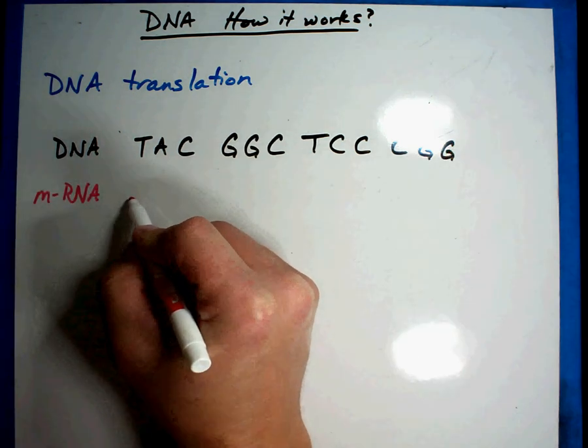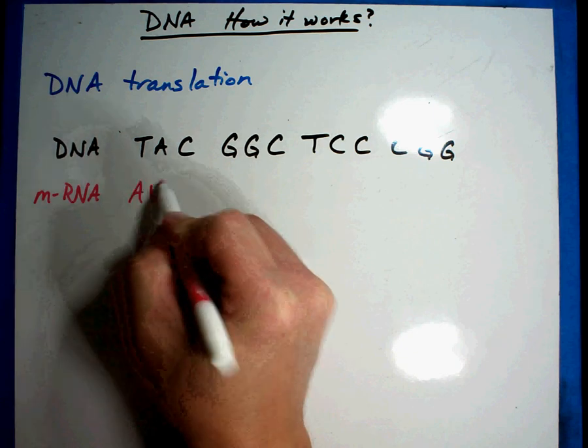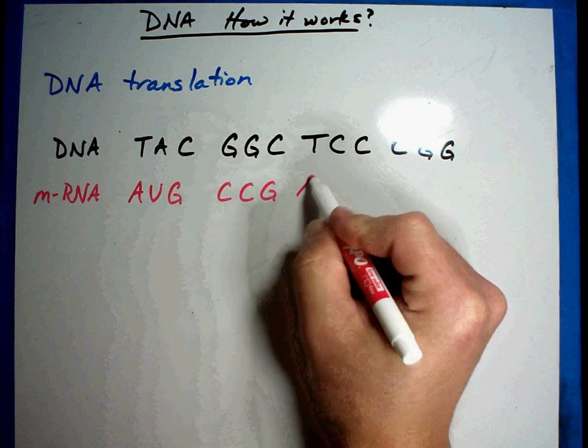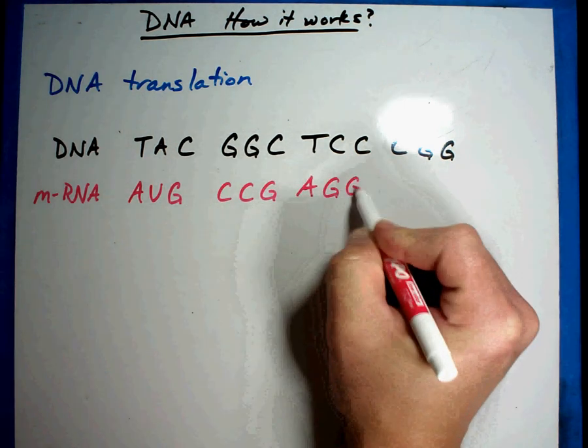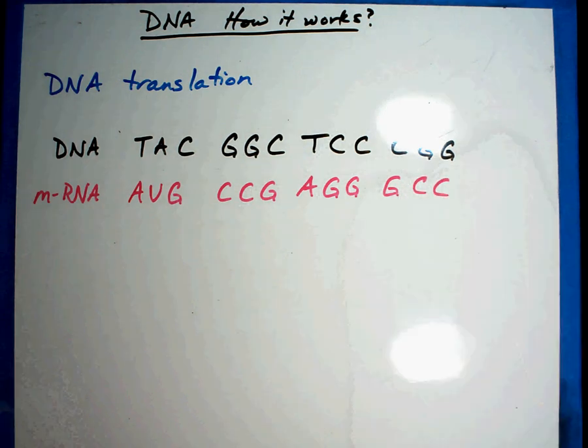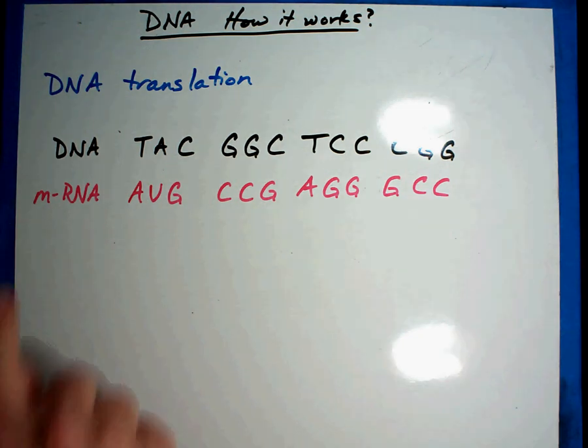So let's see what we get here. We get A, U, G, C, C, G, A, G, G, G, C, C. So here's the example of our messenger RNA and in the last lesson you actually got to practice it yourself. Now we have the secret message.